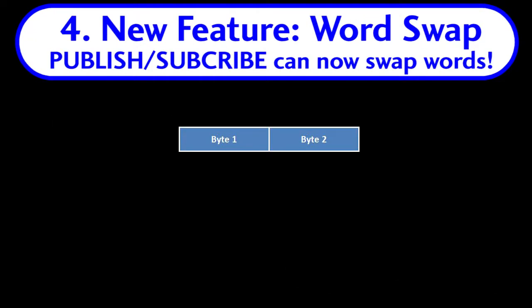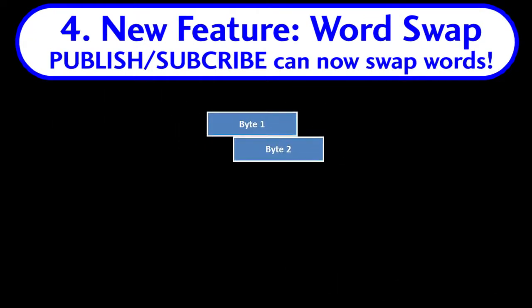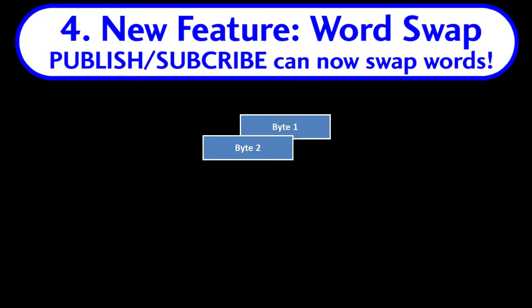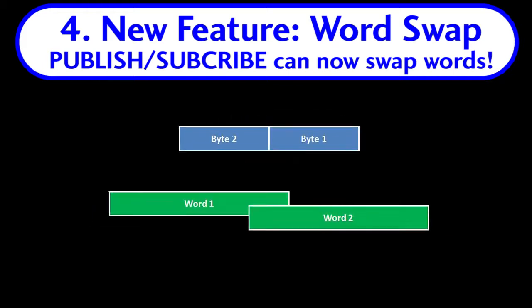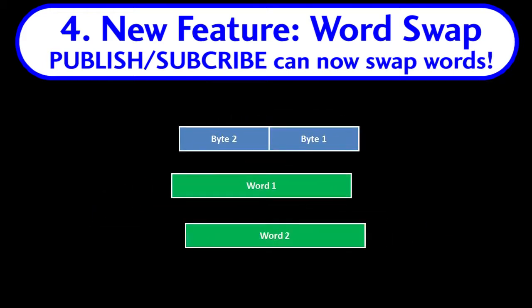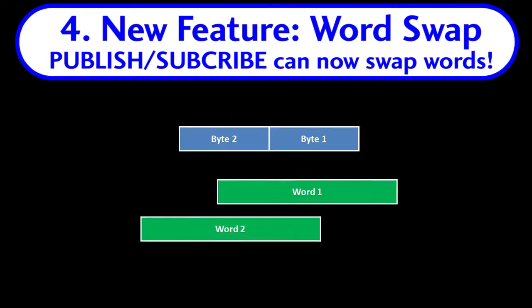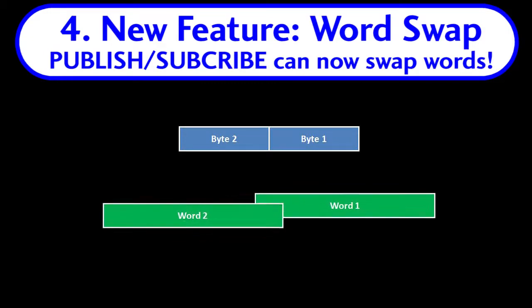In the publish and subscribe instructions, it used to be you could only swap bytes in a 16-bit element. Now you can swap words in a 32-bit DWORD too.